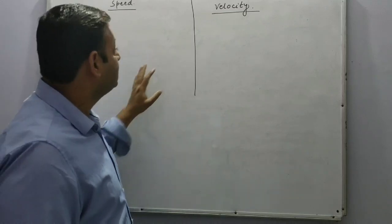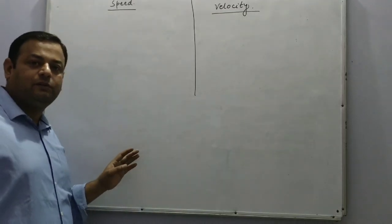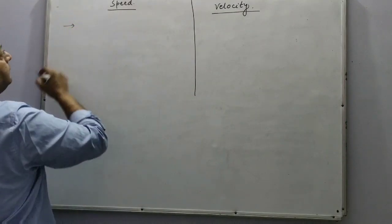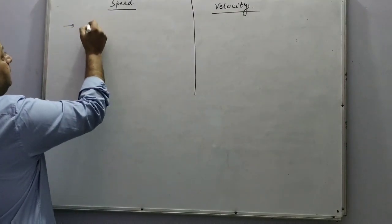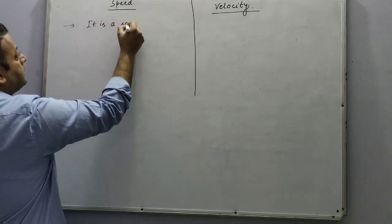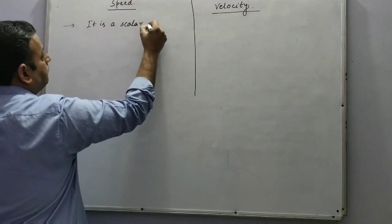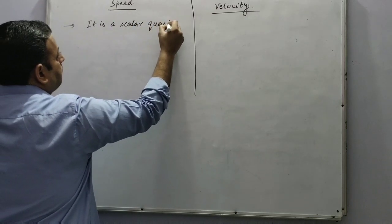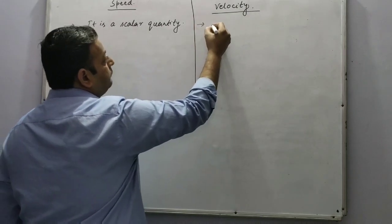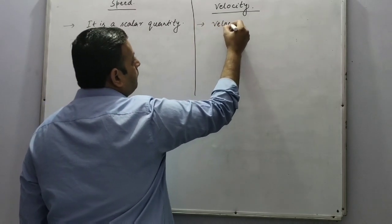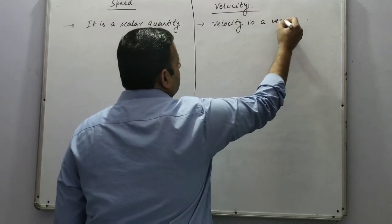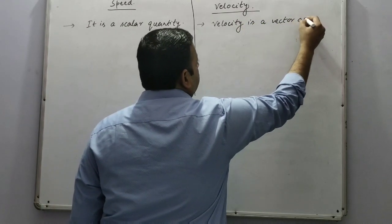Friends, today we are going to discuss the differences between speed and velocity. The very first difference is speed is a scalar quantity whereas velocity is a vector quantity.